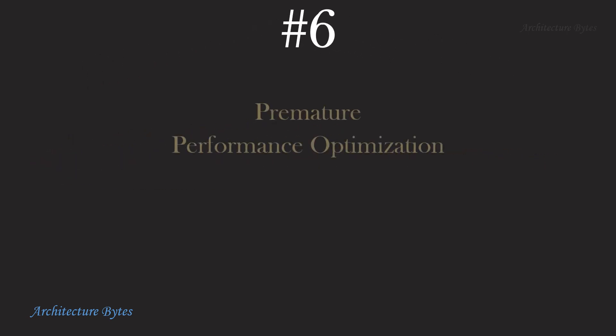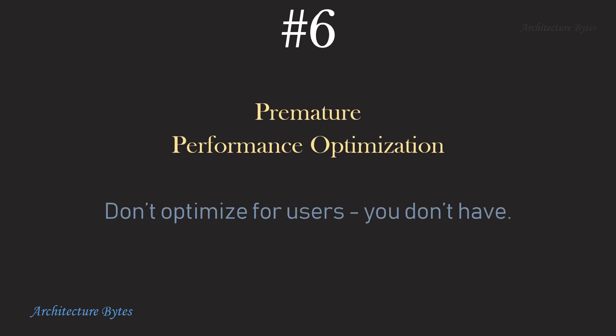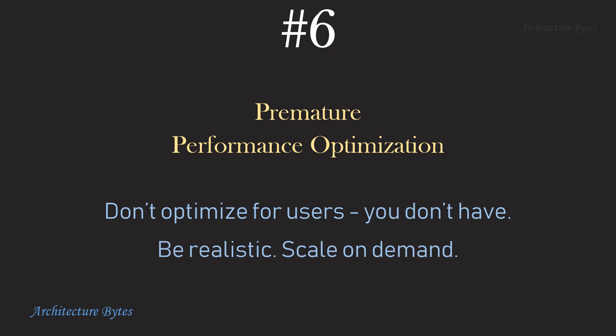At number 6: premature performance optimization. Don't optimize for users you don't have or will never have. For example, a loan management company will not have a million new users overnight — it's not a social media company that would go viral overnight. Therefore, be realistic and scale on demand.